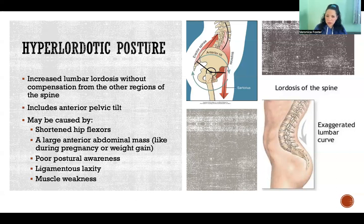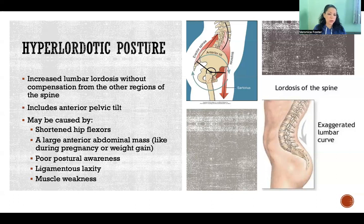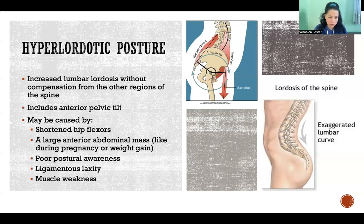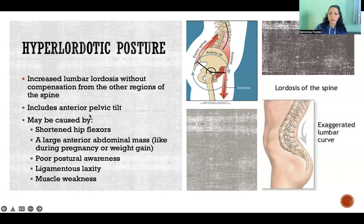Other causes include ligamentous laxity — ligaments that are not strong enough or not maintaining the stability of the spine adequately — and muscle weakness. If the muscles pulling in the opposite direction of the hip flexors are weak, then that person might slip into this hyperlordotic posture.